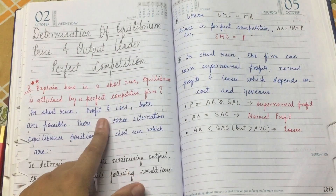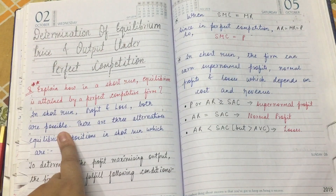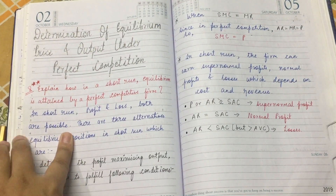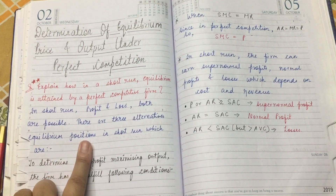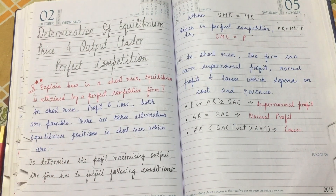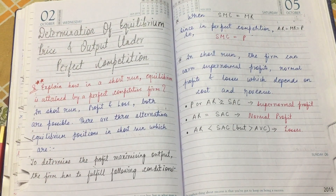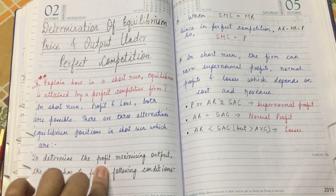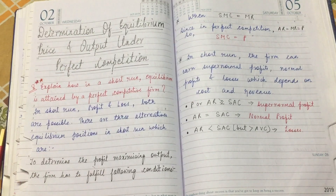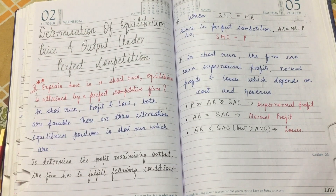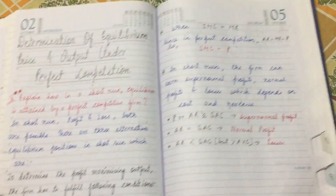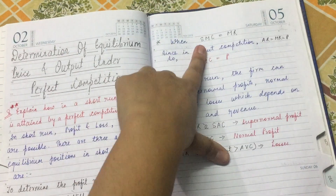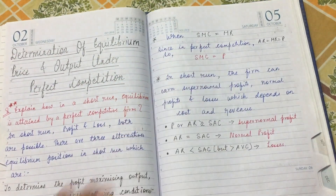In the short run, both profit and loss are possible. There are three alternative equilibrium positions in the short run. The first is to determine the profit-maximizing output. To determine whether the firm is maximizing profit, it needs to fulfill certain conditions.